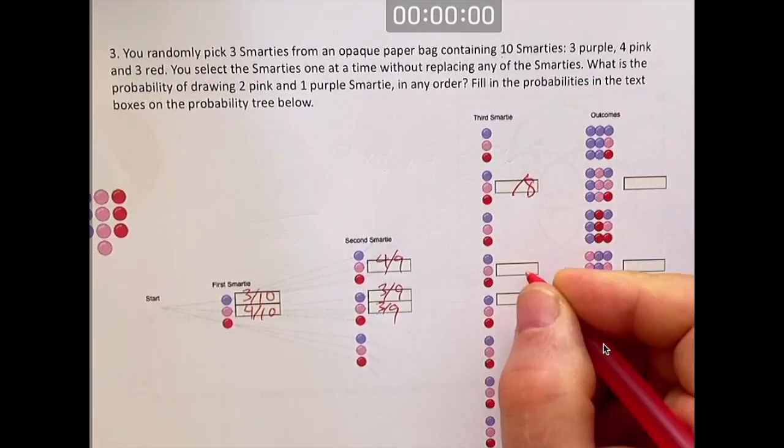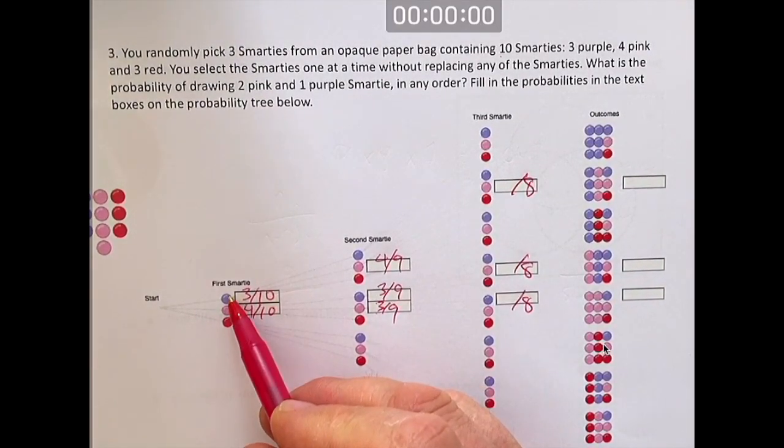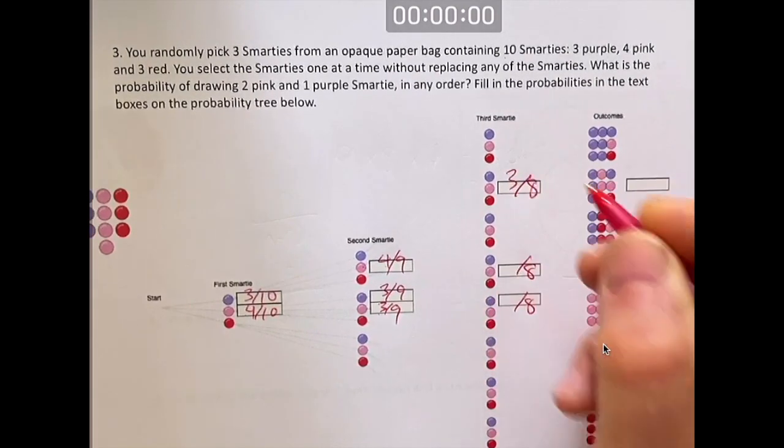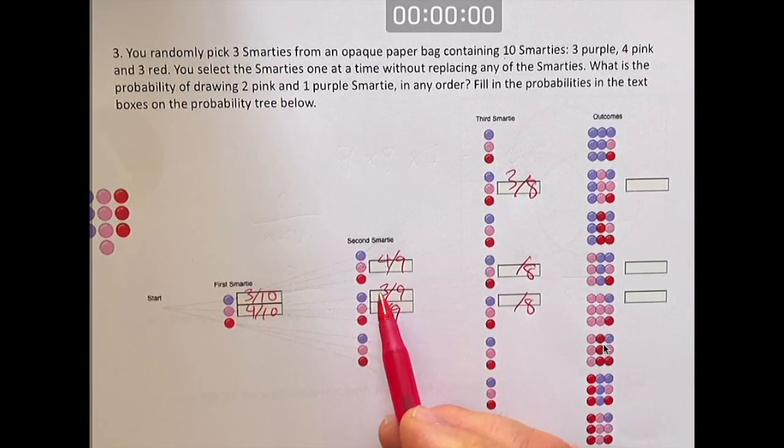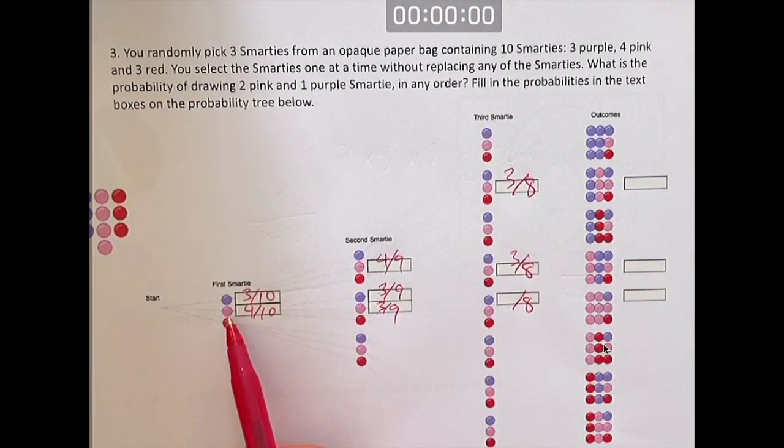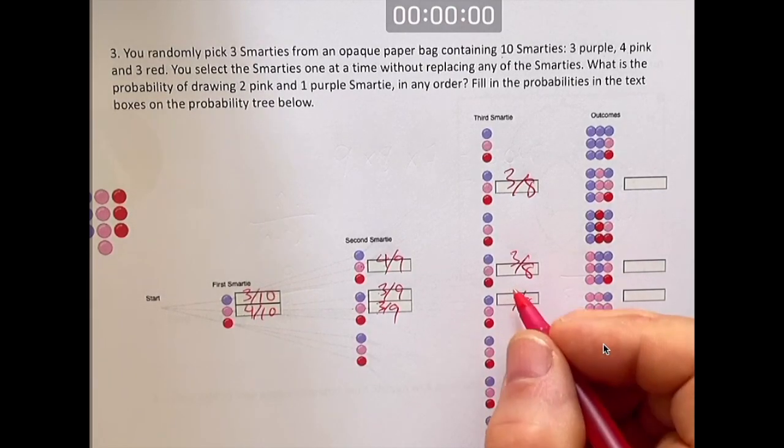For the last Smartie, now it's going to be out of eight. There are only eight Smarties left because you took out two Smarties. You took out a purple, then a pink. There's not going to be four pinks anymore. Now there's only going to be three pinks. If you took out a pink, then a blue, then how many pinks do you have? You have three pinks out of eight. If you took out a pink, then a pink, you haven't taken out any blues yet. So you have three blues out of eight.